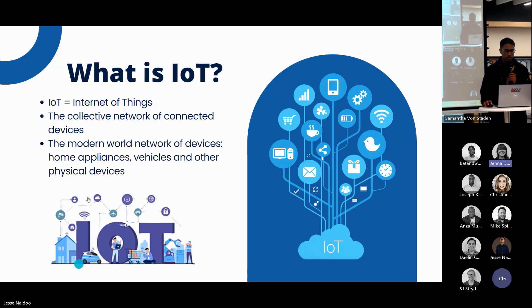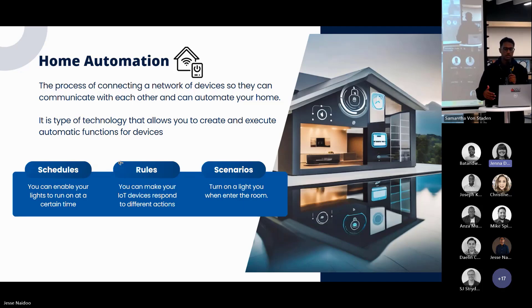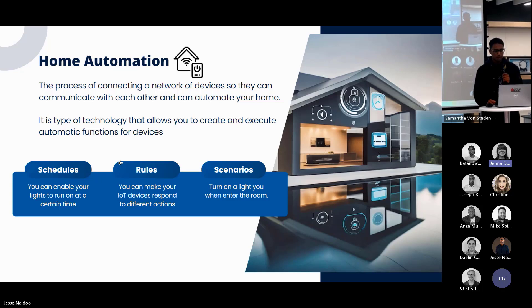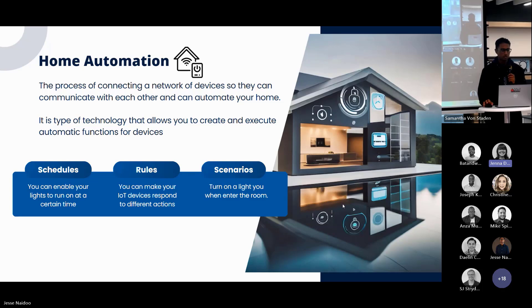Now that we've defined what IoT is, we can define home automation. This is the process of connecting a range of IoT devices to a network so that they can automate your home. It's a type of technology that allows you to create and execute automatic functions for your devices. These functions can be in the forms of schedules, rules, or scenarios.